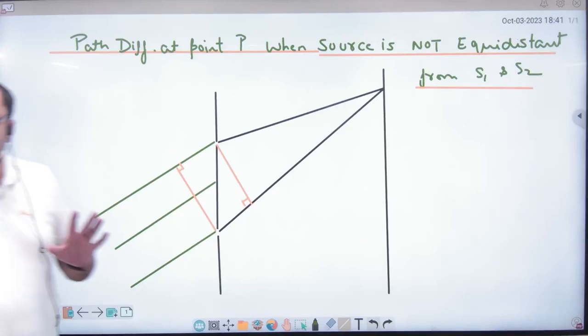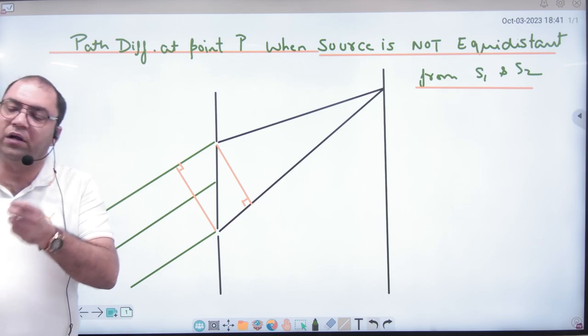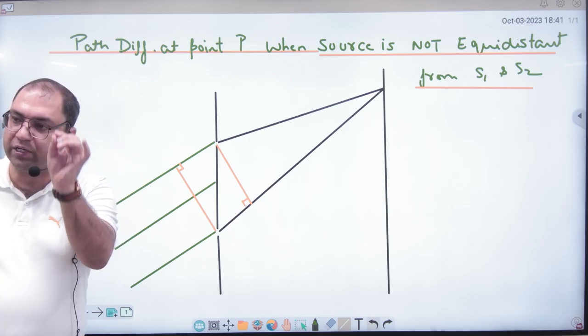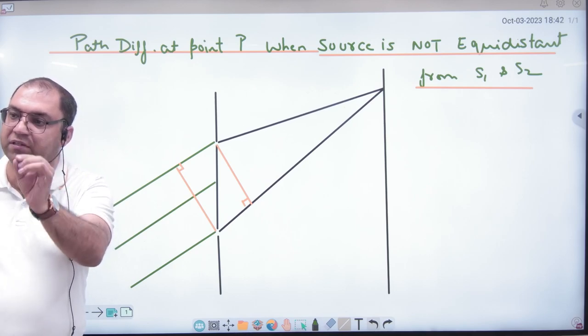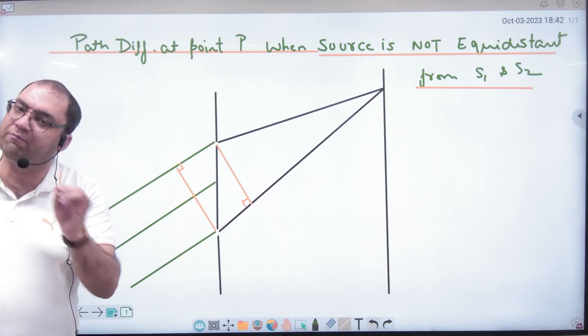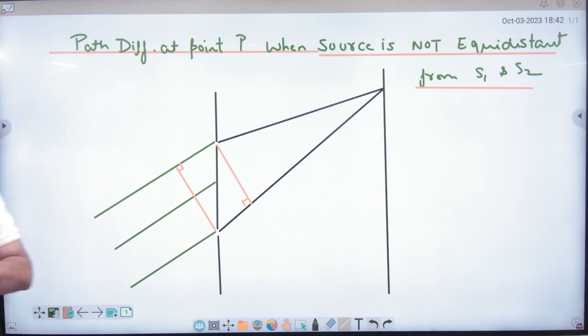The path difference which I want to make at point P. Sometimes there is a question that asks: Write the condition for point P, constructive and destructive interference. What will be the condition of maximum or minima? Or write at point P, what is the problem?